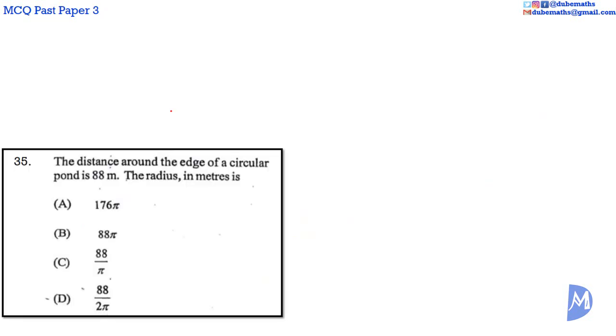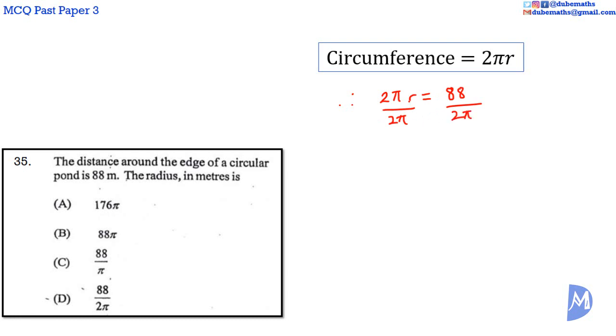Question 35. The circumference of the pond is equal to 88 meters. Circumference is equal to 2 multiplied by pi multiplied by the radius. Therefore, 2 pi r is equal to 88. Solving for r, we divide both sides by 2 pi. The 2 pi would cancel on the left hand side to remain with r. r is equal to 88 over 2 pi. The answer is D.